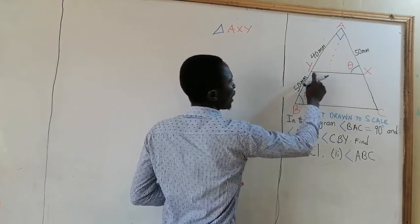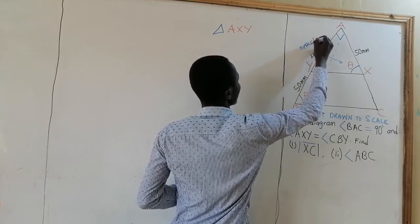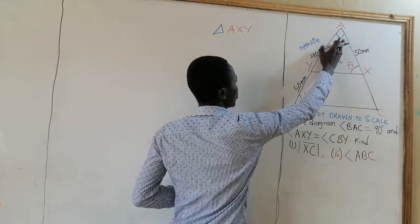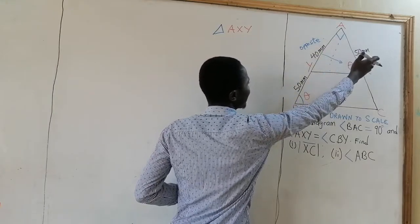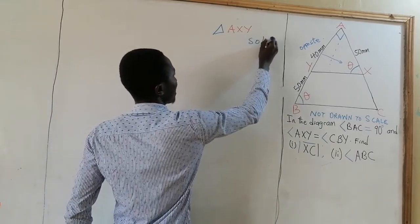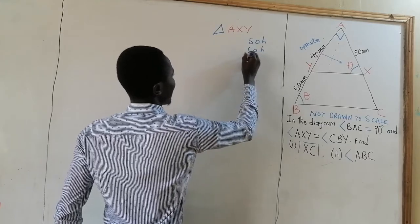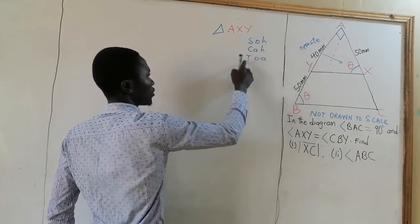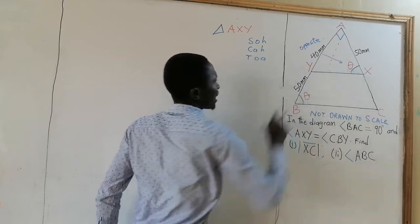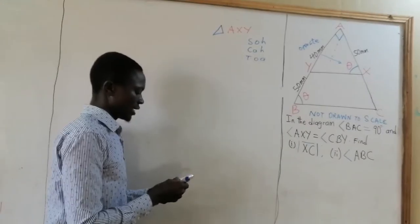If you consider theta, line YA is opposite to theta. So we have this as opposite, and line YX is the hypotenuse of the entire right-angled triangle. So line AX will now become adjacent to this angle. Now you can use SOHCAHTOA: the sine of the angle is SO, the cosine of the angle is CA, and the tangent of the angle is TOA. This is the angle we are considering. If we take the tan of the angle, it will help us because we have opposite to the angle and adjacent to the angle.